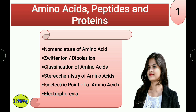This is a common topic for everyone. In this video, I will explain nomenclature of amino acids, zwitterion or dipolar ion, classification of amino acids, stereochemistry of amino acids, isoelectric point of alpha amino acids, and electrophoresis. Before starting, I want you to know that proteins are the polymers of alpha amino acids — many amino acids combine to form a polypeptide, which we call protein.